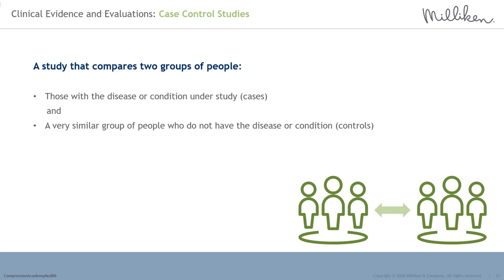Case controlled studies compare two groups of people — those with the disease or condition under study, who are the cases, and a very similar group of people who do not have the condition, who become the controls. For example, comparing those with chronic venous insufficiency to those without, aiming to identify factors which may have predisposed the disease process — such as whether it is related to a profession, excessive standing, flying, driving, or is not profession related at all.